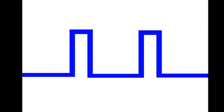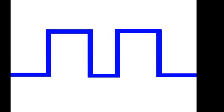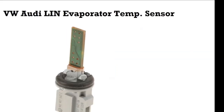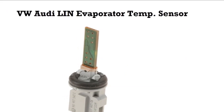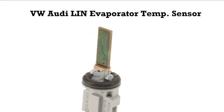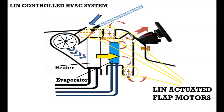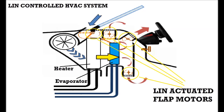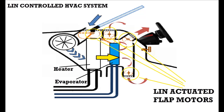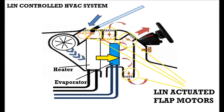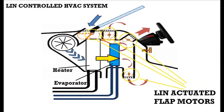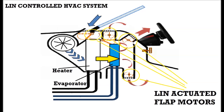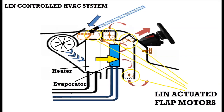Not only does LIN apply to the pressure sensor, it also has to do with all the stepper motors inside the air conditioning box inside the dash. You've got a bunch of flaps that move and redirect the air — like the defrost or defogger going through the top, the front AC, or the floor going to your feet. All that stuff is controlled by flaps, and it's controlled by LIN-actuated motors.